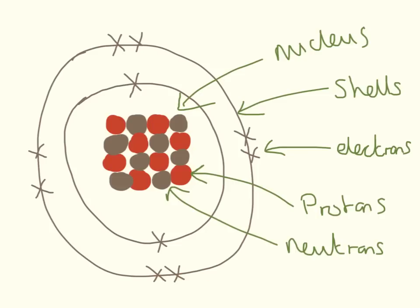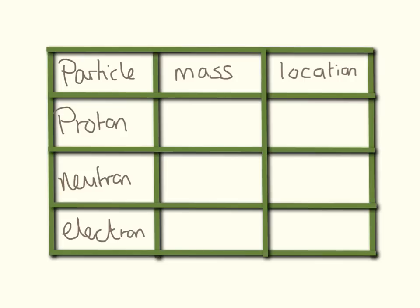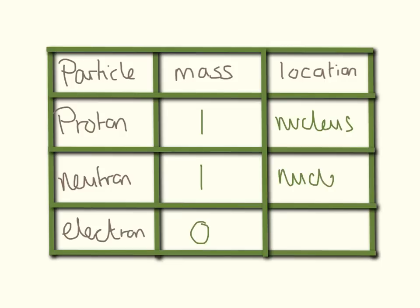The electrons, which sit around the shells on the outside, weigh so little that we say they weigh nothing. The heavy bits are the protons and the neutrons in the middle. So to make our lives easy, we say that protons weigh one, neutrons weigh one, and electrons weigh nothing. Protons are in the nucleus, neutrons are also in the nucleus, and electrons are in the shells.